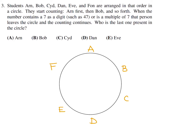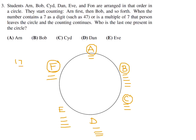Start counting: 1, 2, 3, 4, 5, 6, 7 — that person leaves. Keep counting: 8, 9, 10, 11, 12, 13, 14 — that person leaves (14 is a multiple of 7). 15, 16, 17 — that also leaves because 17 has a 7 in it. 18, 19, 20, 21 — 21 is a multiple of 7, so B leaves. 22, 23, 24, 25, 26, 27 — 27 has a 7 in it, so he leaves. The only person left is D. Number 3, the answer is D.